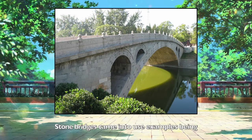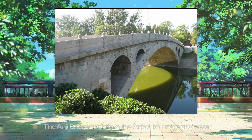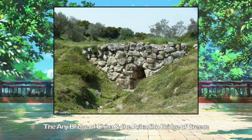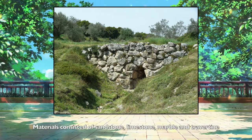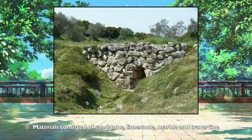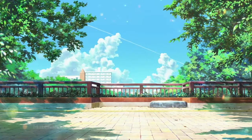Stone bridges then came into use, with examples being the Anji Bridge of China and the Alcantara Bridge of Greece. Materials consisted of sandstone, limestone, marble, and travertine.